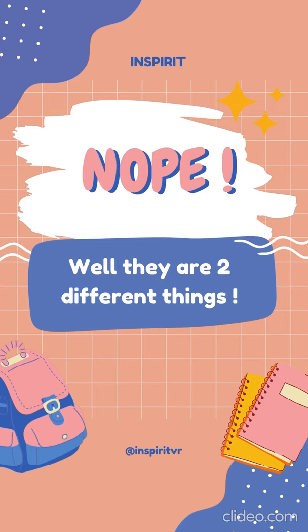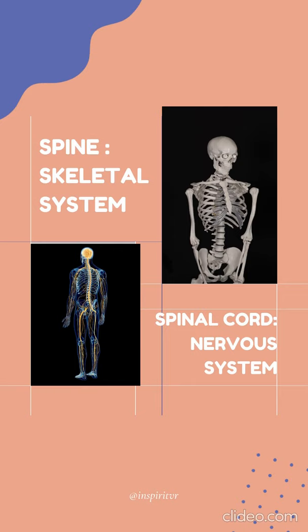Your backbone is a part of your skeletal system. The spinal cord is part of your central nervous system. Your spine or your backbone is your body's central support structure. It connects different parts of your musculoskeletal system.